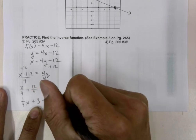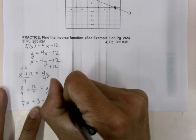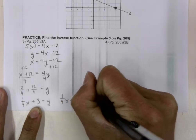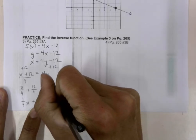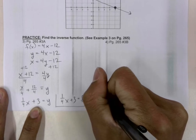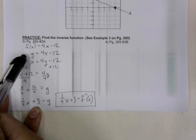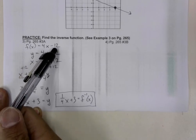Let's do that now. And this here is our inverse function of f of x is equal to 4x minus 12.